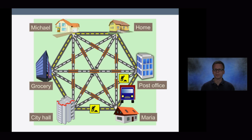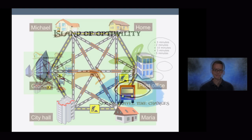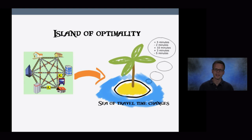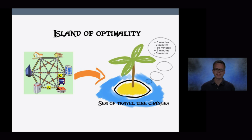Or even more generally, is there a way to describe all traffic situations for which a given solution — a given order — is the best we can possibly do? That is the question I look at in my research. On the left, we have our example where the best solution is to travel on the roads on the outside of the map — the ones with the lane marker highlighted in yellow. I'm interested in finding the set of all travel time changes for which that yellow tour is the best that exists. That is what I call the stability region associated with that tour.